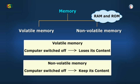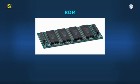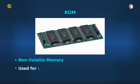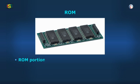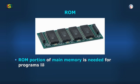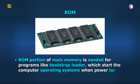I have here two memories — RAM and ROM. Let me introduce you to both of them one by one. First, ROM is non-volatile memory that retains data even when power is switched off. ROM is used for storing programs that are permanently resident in the computer. The ROM portion of main memory is needed for programs like the bootstrap loader, which starts the computer operating system when power is turned on.